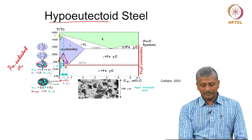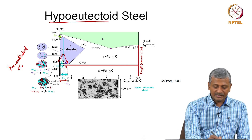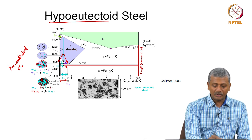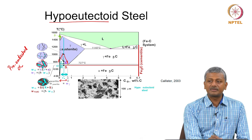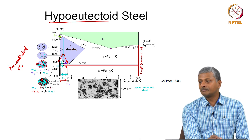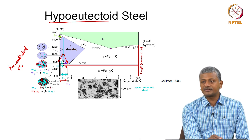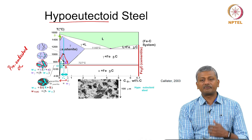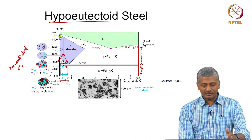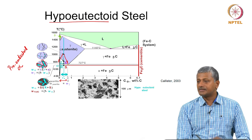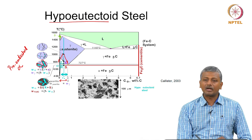Basically, the alpha phase marked in blue is the alpha phase that is formed even before the temperature of 727 degrees is reached. What happens after 727 is that whatever remaining gamma is there gets converted to pearlite — the eutectoid transformation of gamma will take place at 727. But even before the temperature of 727, you also have the alpha phase crystallizing and forming out.